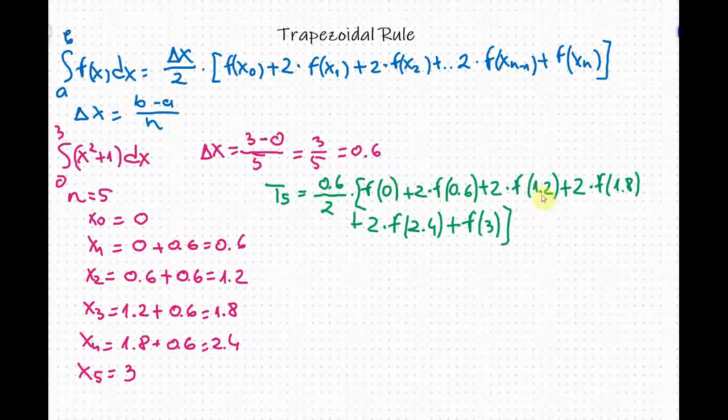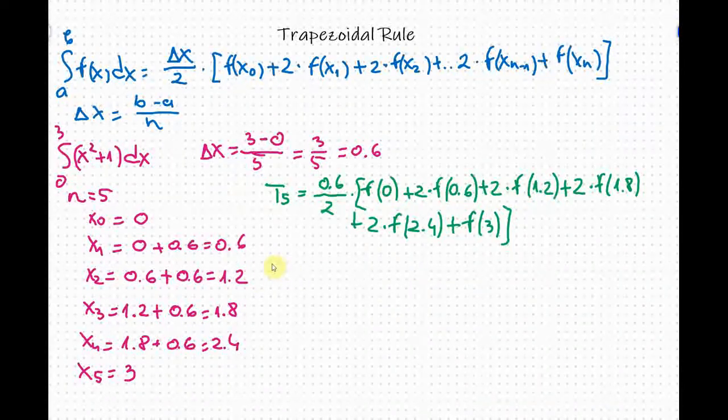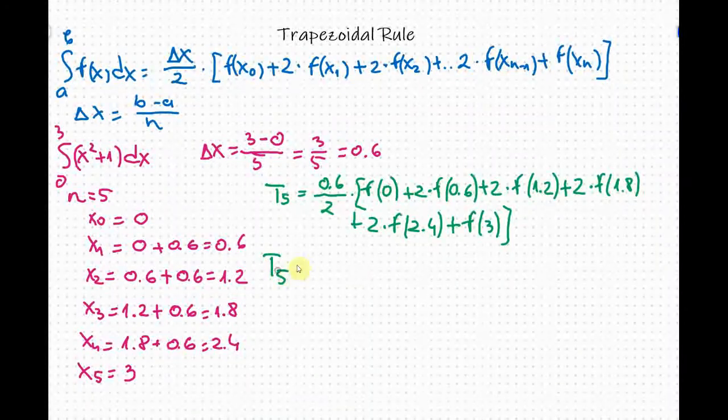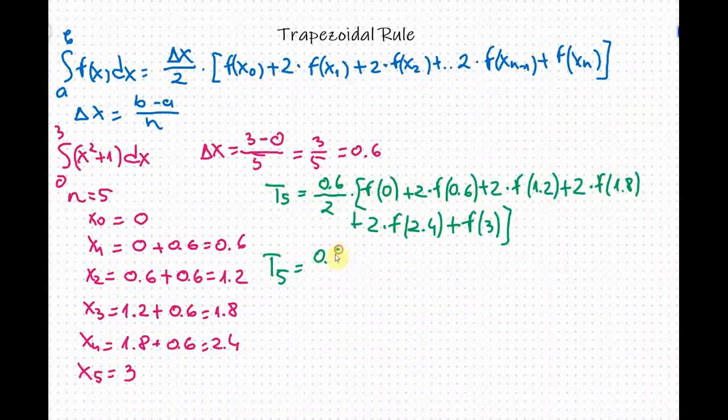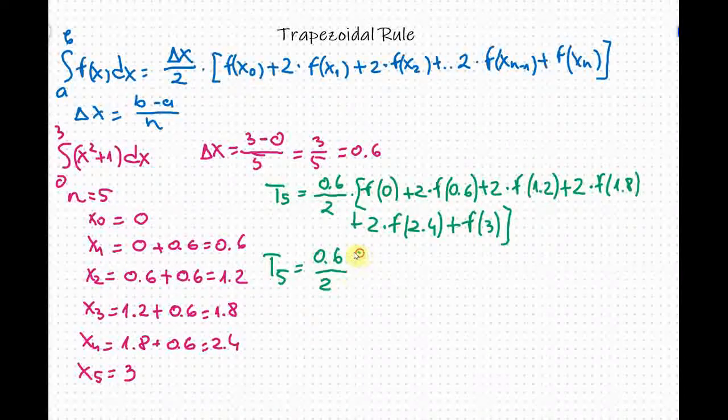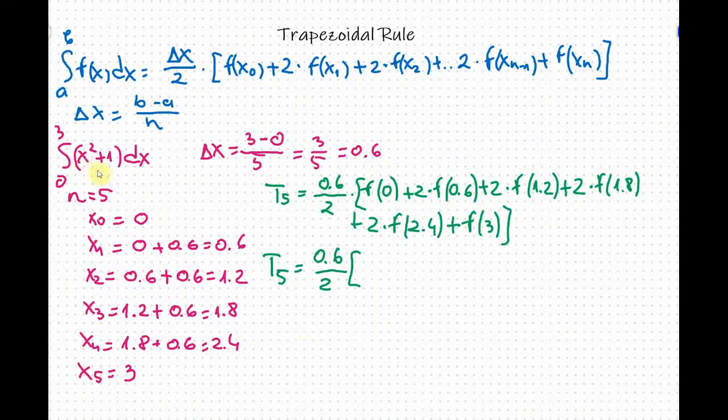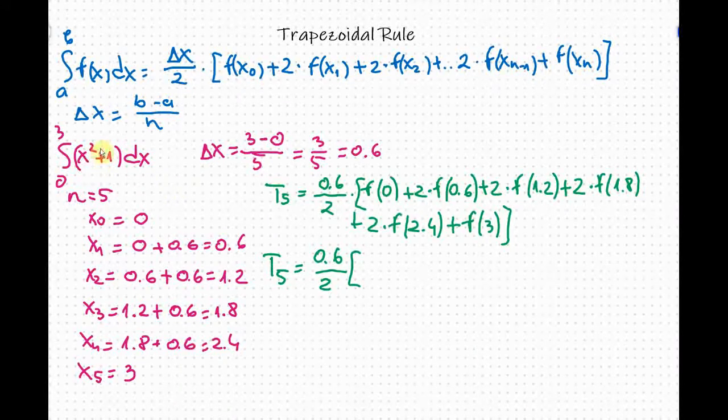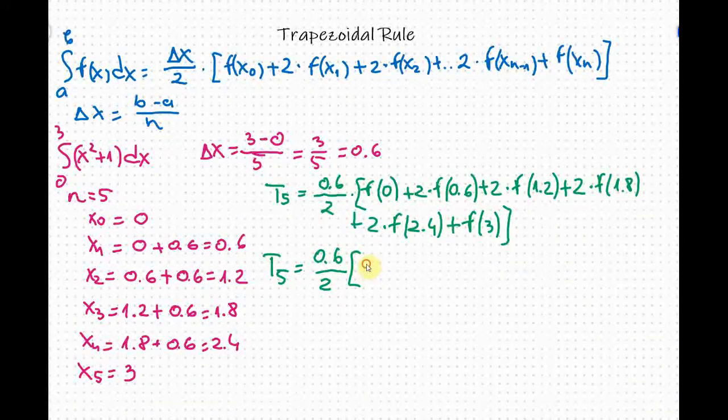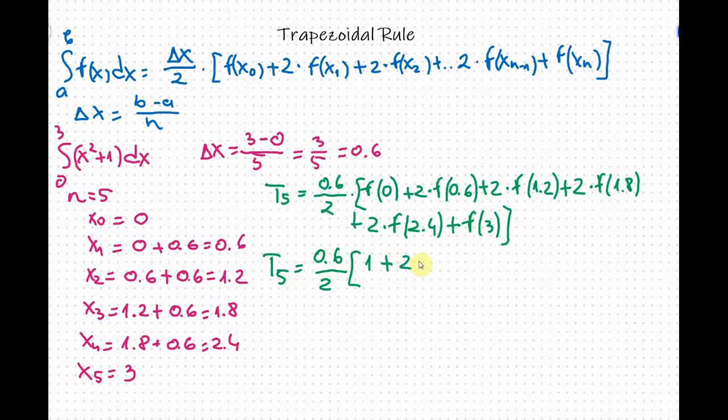T sub 5 is 0.6 over 2 and now I just plug in this 0 at the place of x so 0 squared plus 1 equals 1 plus 2 times now 0.6 squared plus 1 and then plus 2 times 1.2 squared plus 1 and then plus 2